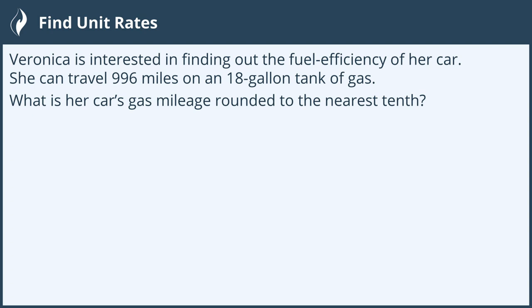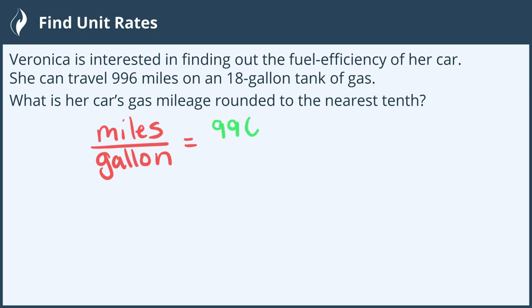To find gas mileage, this is miles per gallon. We can now substitute in what we were given for miles and gallons. We know that she travels 996 miles with 18 gallons of gas.